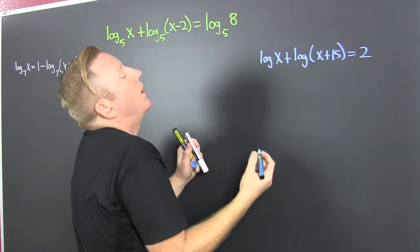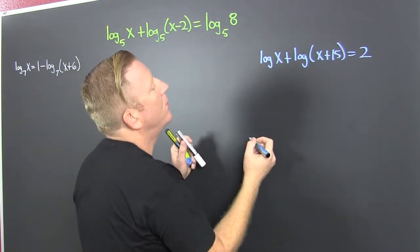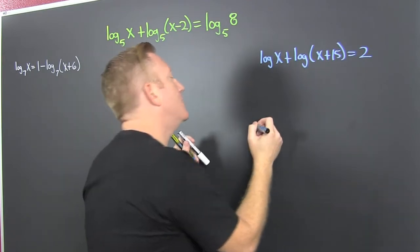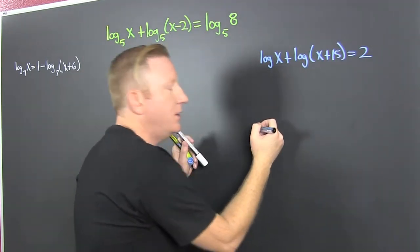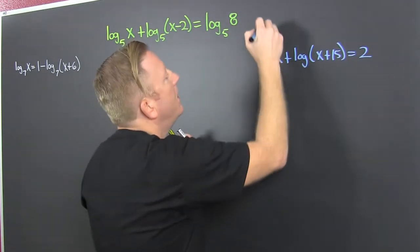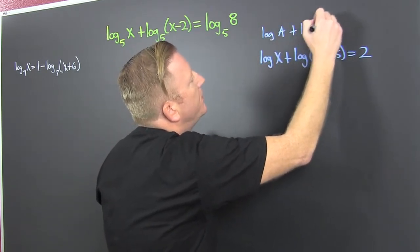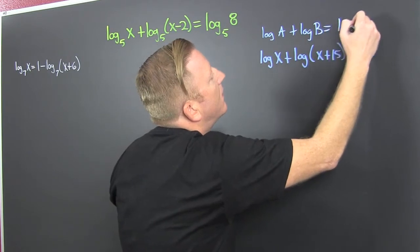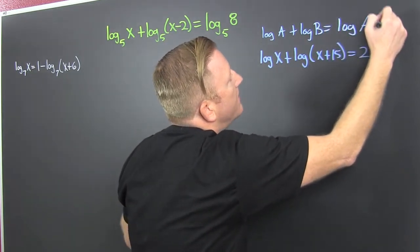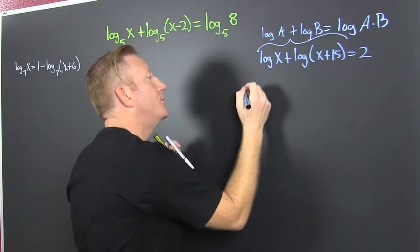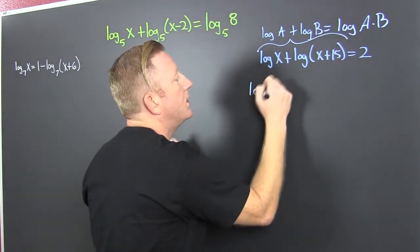What do we want to do? We want to get one log. Let's get those logs together. It'll be all right. I'm doing log of a plus log of b, that's the log of a times b. That's how we combine those two into one log.